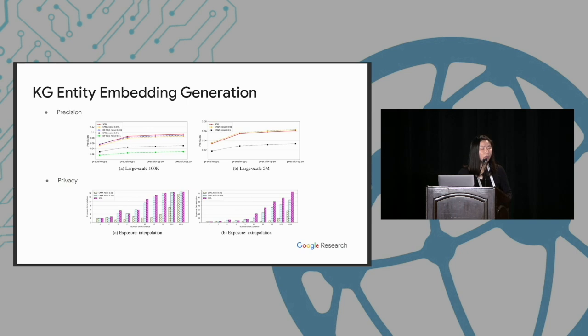So these are the results we got for the KG entity embedding generation. Basically, we see a similar result. IANA performs better or comparable to DPSGD and also it can give some privacy protection. One thing to note is that for the large-scale 5 million dataset, we don't have any result for the traditional DPSGD because the training speed is just too slow to produce any meaningful result.